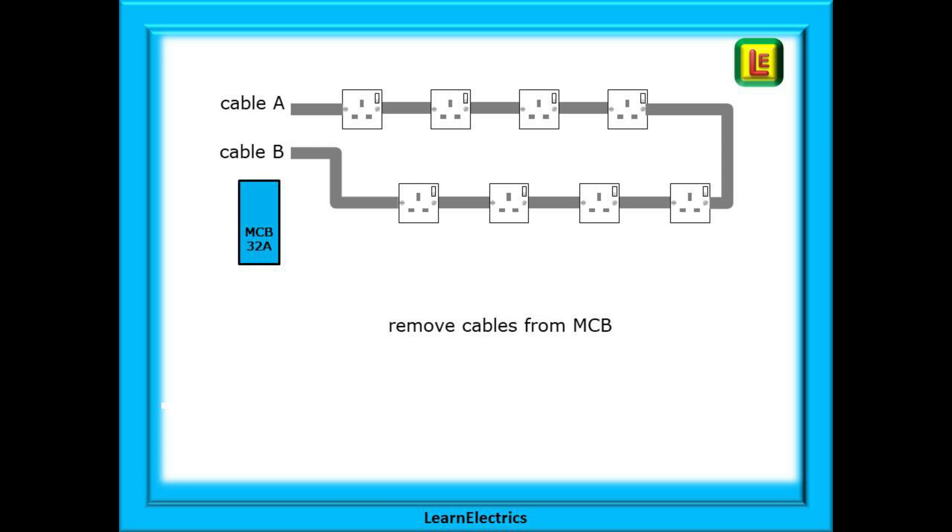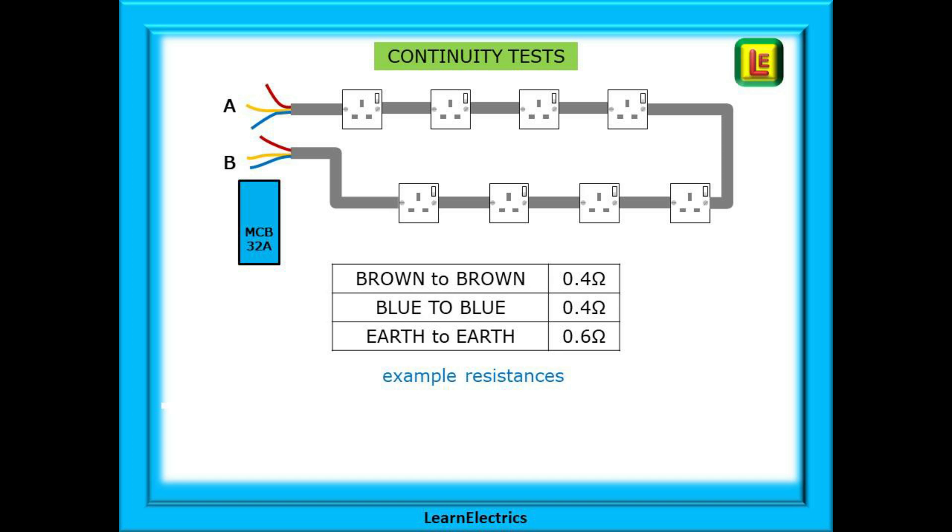After safe isolation, start by removing the two ring circuit cables from the MCB, the neutral block, and the earth block. We've called them here cable A and cable B. Some electricians call them number one and number two—it doesn't matter so long as they are identified. Separate the individual conductors so that all six are in free air. Select the correct low ohms range on your meter, check that the meter is working correctly, and then begin testing.